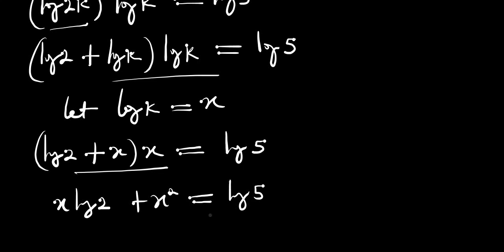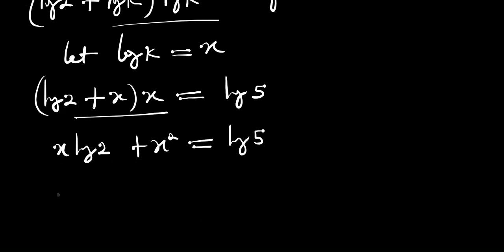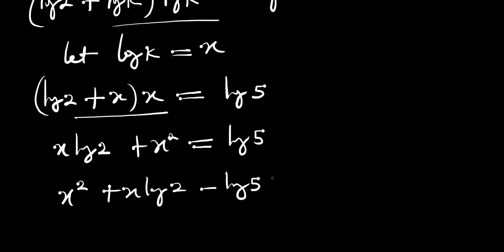Let's go ahead and rearrange this equation. We are going to have x squared plus x·log of 2 minus log of 5 equals 0. This becomes a quadratic equation.